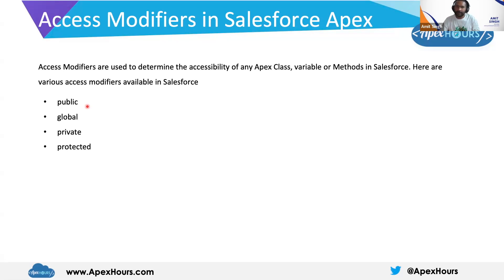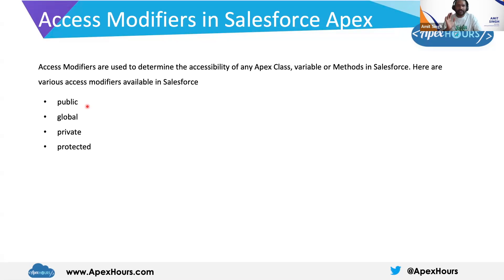Let me give you a generic example. There is a building, and there is a society. Under that society, there are multiple buildings. There is also a swimming pool. That swimming pool is a public property and can be accessed by any person living in that society.